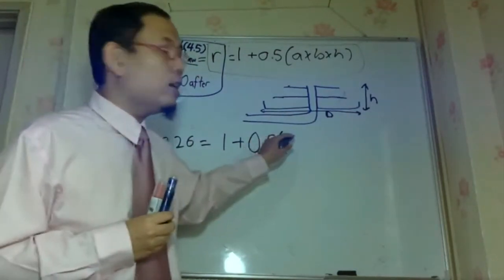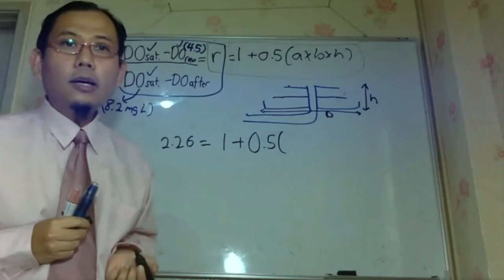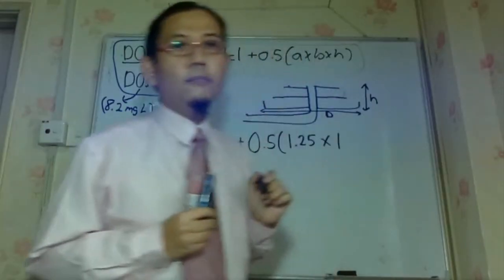so do you remember what was the value for slightly polluted water? 1.25. 1.25, thank you. Step wheel. 1.3. 1.3, okay, and then we will write our head.